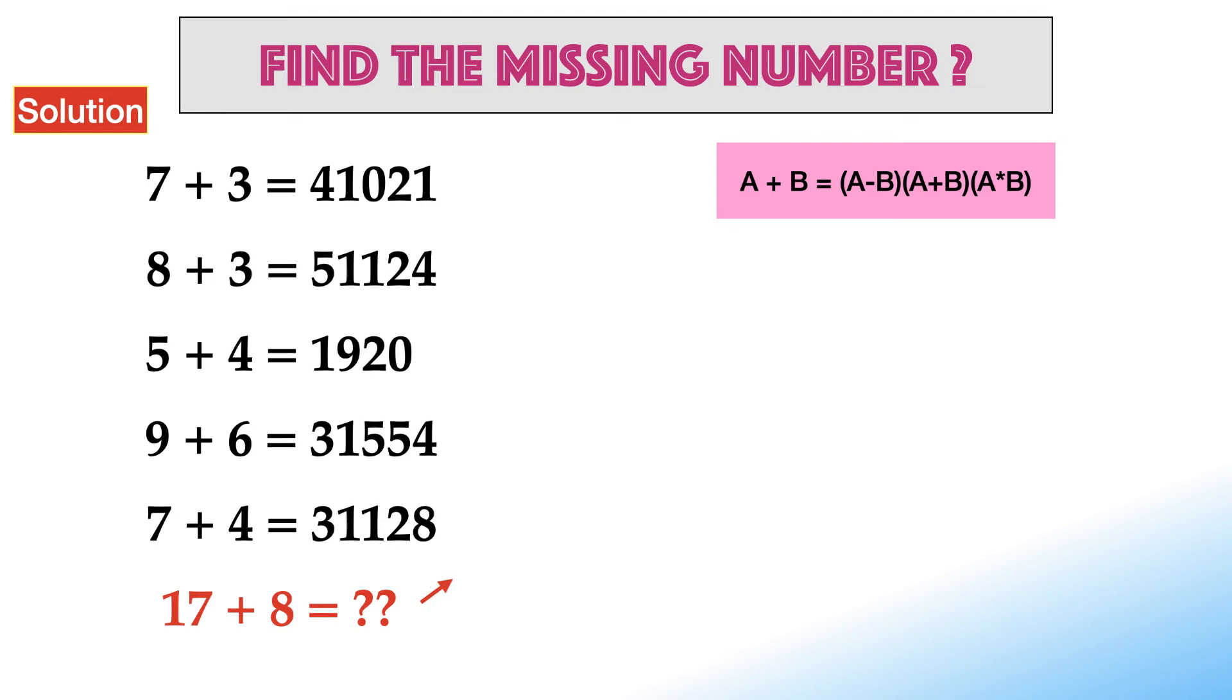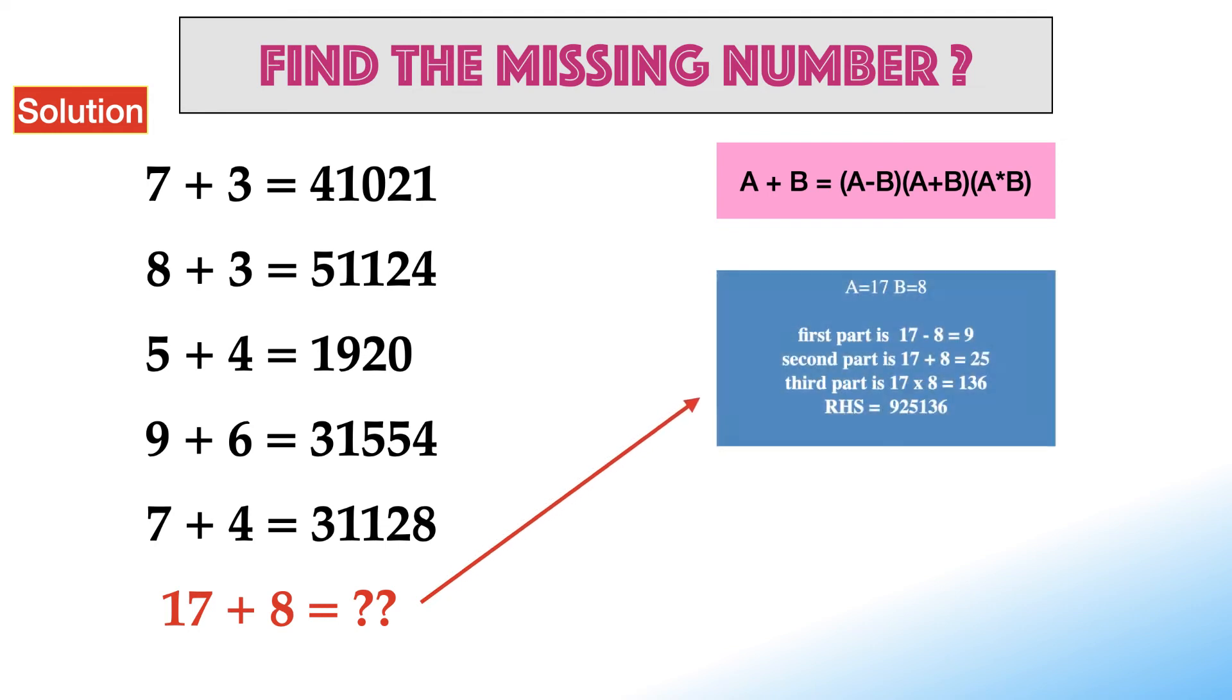Let's find the missing number according to the logic. In the final equation, A equals 17, B equals 8. Hence, first part is 17 minus 8 which is equal to 9. Second part is 17 plus 8 equals 25. Third part is 17 times 8 which is equal to 136. Hence, RHS is 925136.